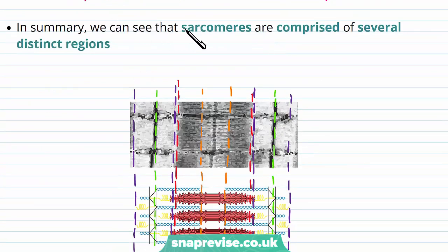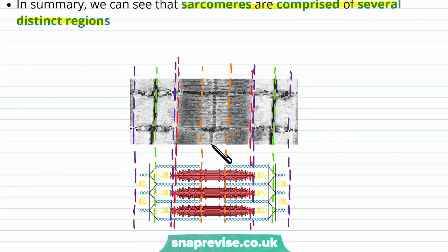So in summary, we can see that sarcomeres are comprised of several distinct regions. So this lines up the image with the diagram we've been looking at. The purple region is the I band, which contains only actin, and you can see that either side it's actually lighter because there's only actin there.